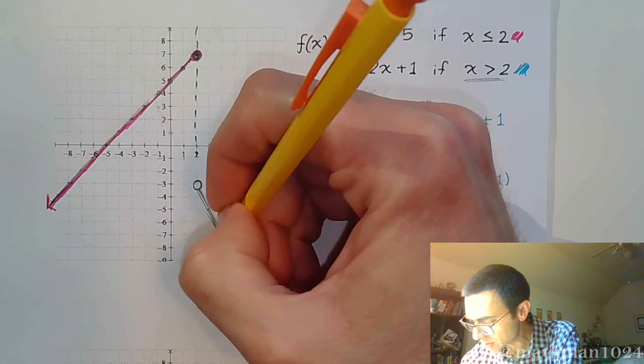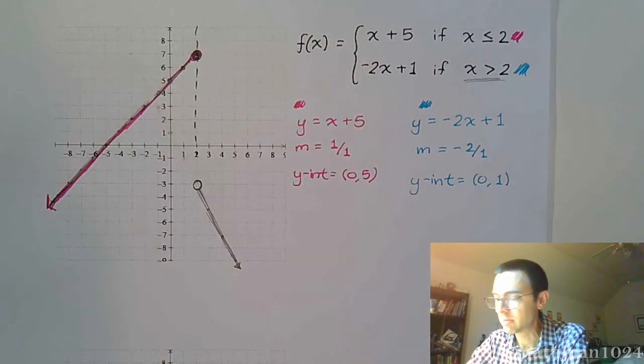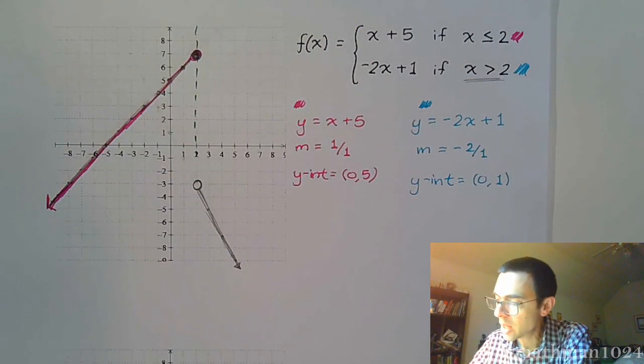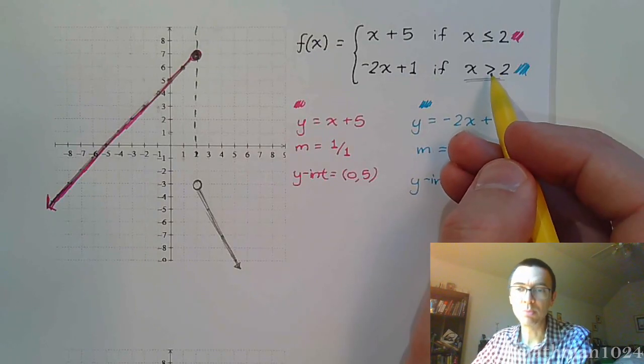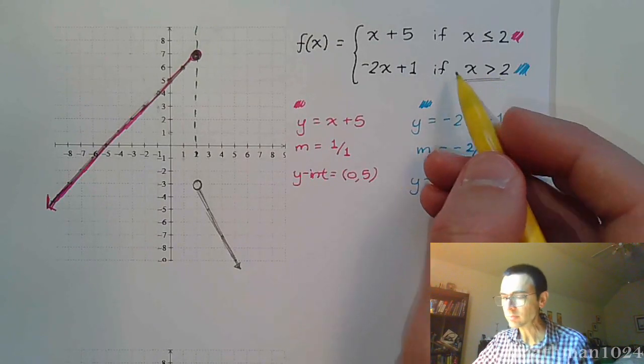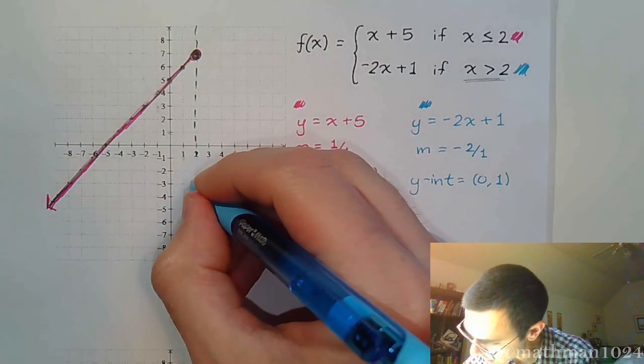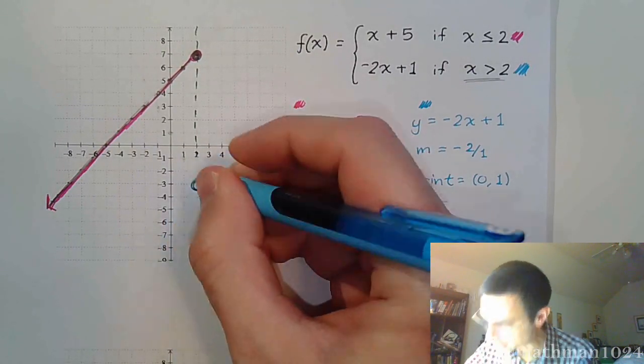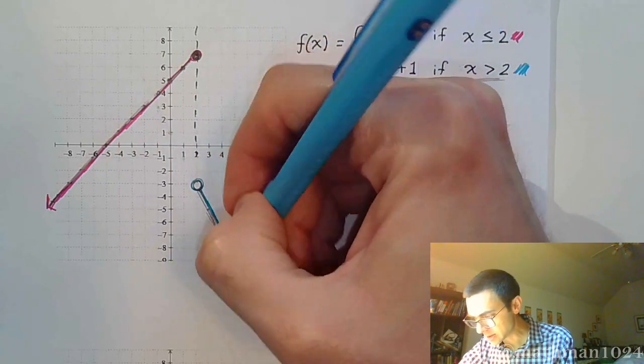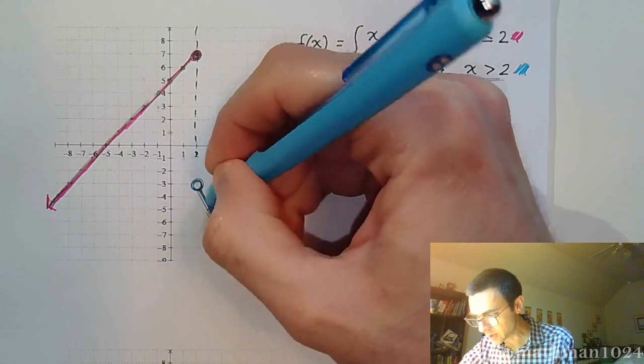This guy starts right here and goes down at a rate of 2 over 1. We have that line. Now, since this says x is greater than 2 but not equal to it, we're going to keep this as an open circle. That open circle denotes that we are not including that endpoint.